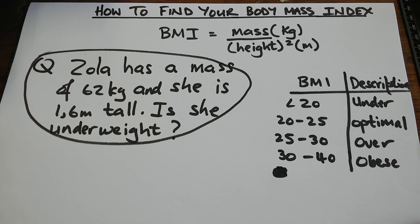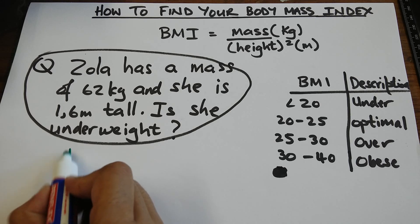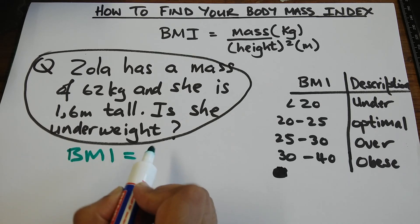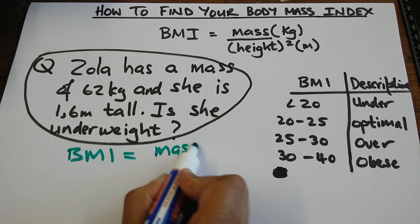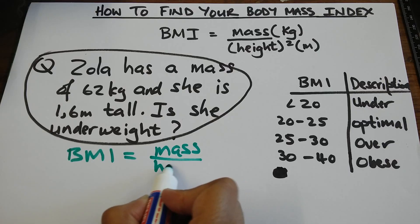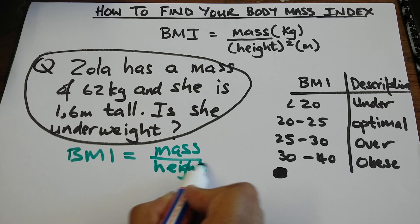We will start by writing down the formula. We're going to say BMI is equal to mass over height squared.